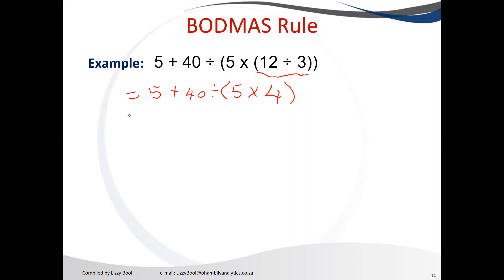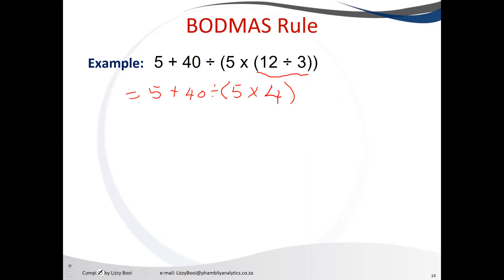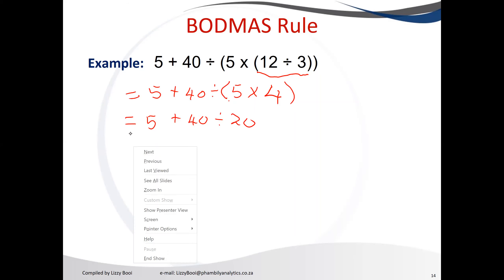The next step is to remove the outer bracket. We multiply 5 times 4, which equals 20. Going back to our BODMAS rule, we now have 5 plus 40 divided by 20. Since division comes before addition, we solve the division side first.